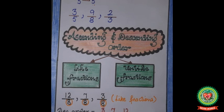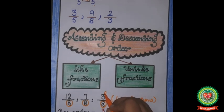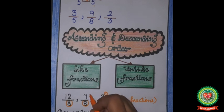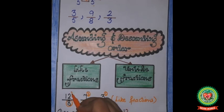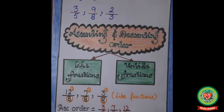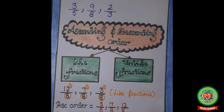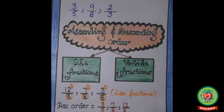When like fractions are given, we compare the numerators. For ascending order, we arrange from smaller to greater. The smallest numerator is 3, so 3 upon 8 is number 1. Next is 7, so 7 upon 8 is number 2. Then 12 upon 8 is number 3. So ascending order is: 3 upon 8, 7 upon 8, 12 upon 8.